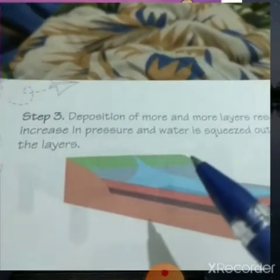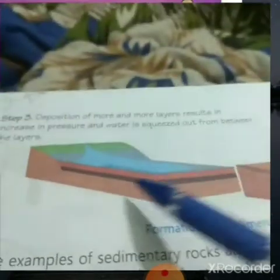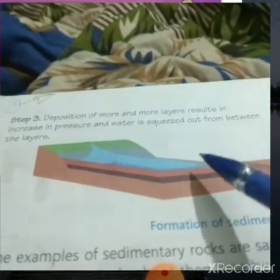In step 3, deposition of more layers results in an increase in pressure and water is squeezed out from between the layers. In step 4, due to certain activities in the ocean, the layers get pushed upwards and are exposed as rocks.